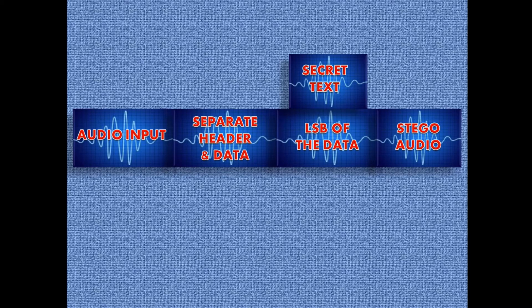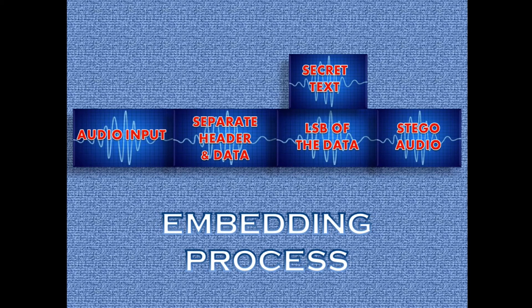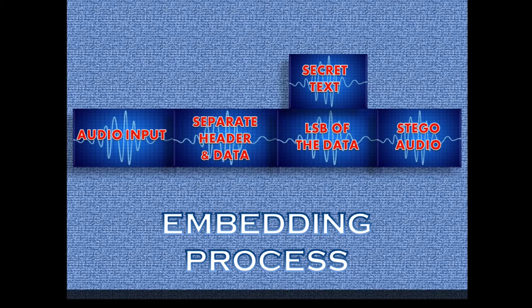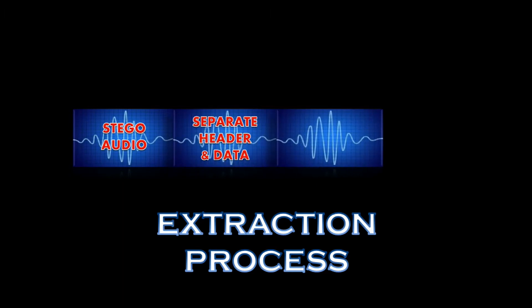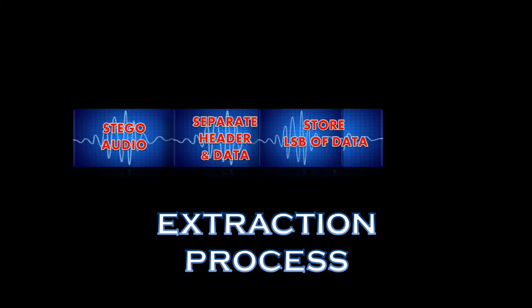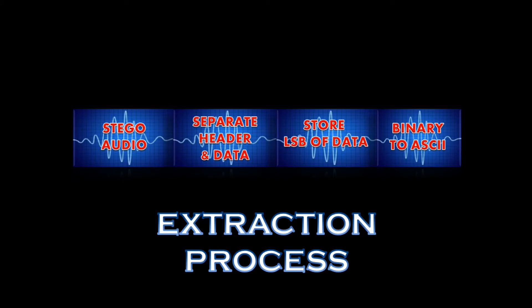Finally, you will get the stego audio — the audio containing both the secret text and the audio file. This process is known as the embedding process. The process of retrieving the secret text back is known as the extraction process. Here, again take the stego audio, separate its header and data, and store the LSB of the data, because the LSB contains the secret text.